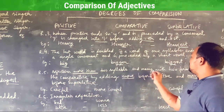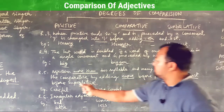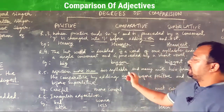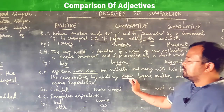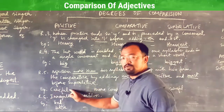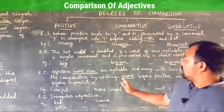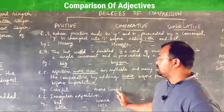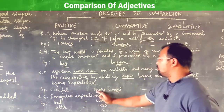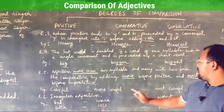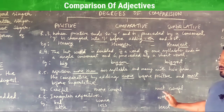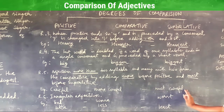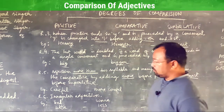Rule number five: adjectives of more than two syllables and many with two syllables form the comparative degree by adding 'more' before the positive form. For example, the word 'careful' — in the comparative degree it becomes more careful. In the superlative degree you add 'most', so it becomes most careful.